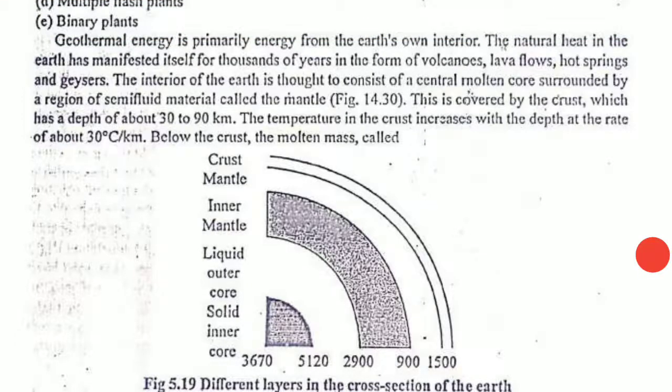The interior of the earth is thought to consist of a central molten core surrounded by a region of semi-fluid material known as mantle. The inside is solid and then you have liquid that is called mantle.